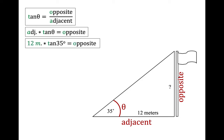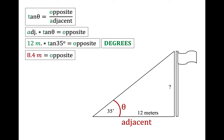We rearrange by multiplying the adjacent to both sides and plug in our values. Adjacent is 12 meters, theta is 35 degrees. Remember your calculator needs to be in degrees, not radians — check your screen for 'rad' or 'deg', go into mode and toggle to degrees if needed. So the tangent of 35 degrees times 12 meters gives us that the opposite side is 8.4 meters long.